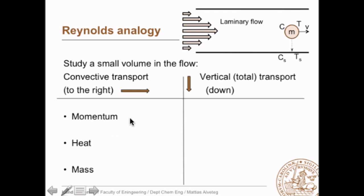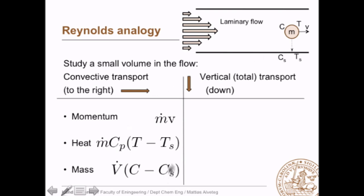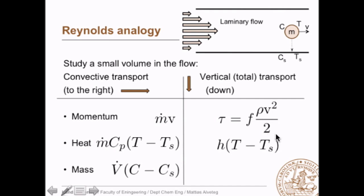The convective transport of momentum is how many kilograms per second times the velocity. The heat transport to the right is mass flow rate times cp in J/kg times the temperature difference — we always relate to a reference temperature, easiest being the surface temperature Ts. For mass, we compare how much is moved in this direction versus what would be transported if the concentration equaled the concentration at the wall. The vertical transport is expressed using transfer coefficients: for momentum, Fanning's friction factor times rho*v²/2; for heat, the heat transfer coefficient times the temperature difference; for mass, the mass transfer coefficient times the concentration difference.